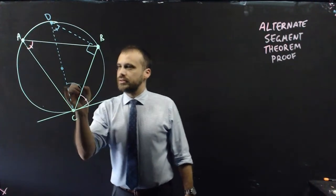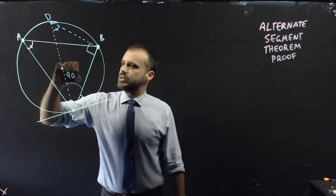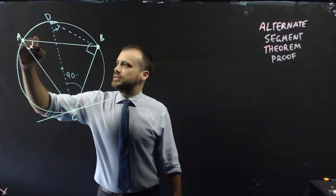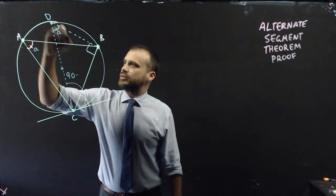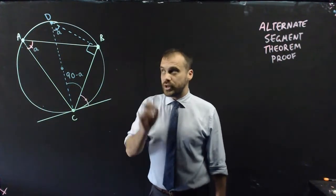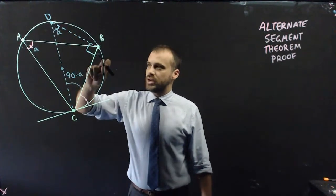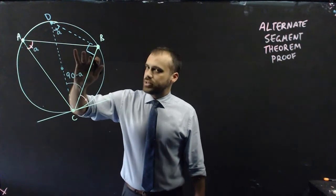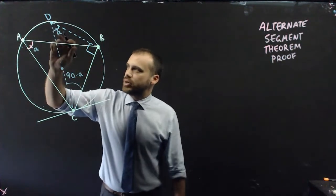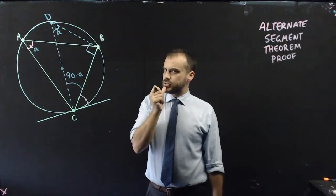This angle here is equal to 90 minus, well, let's give this a letter here, let's just call it angle A. This bit here is equal to 90 minus A, because the internal angles of a triangle are 180. 180 minus the 90 is 90, 90 minus that will give us this bit here. What else do we have?